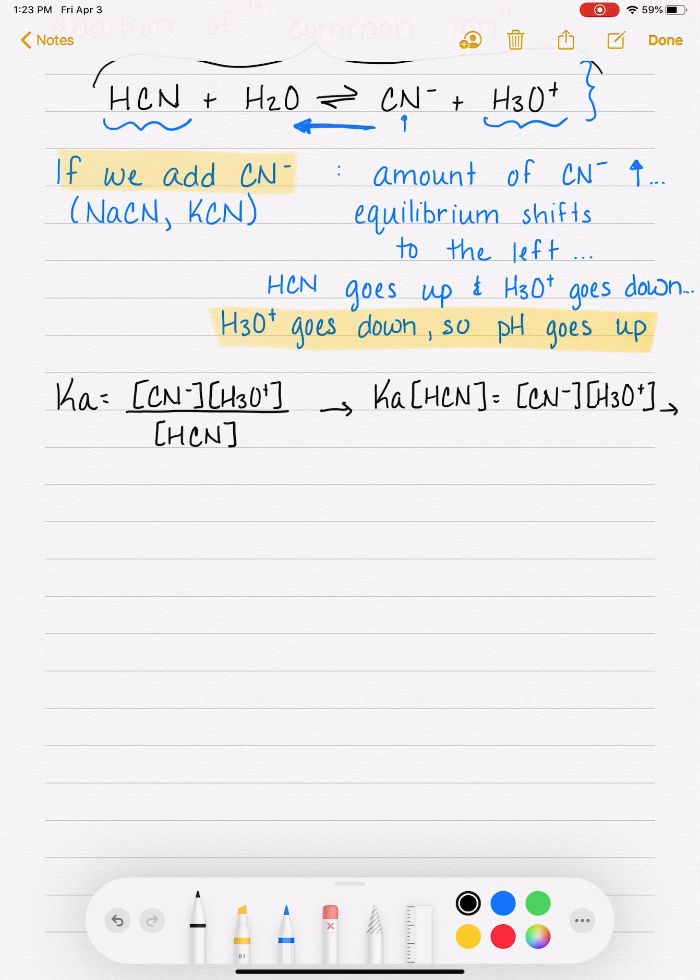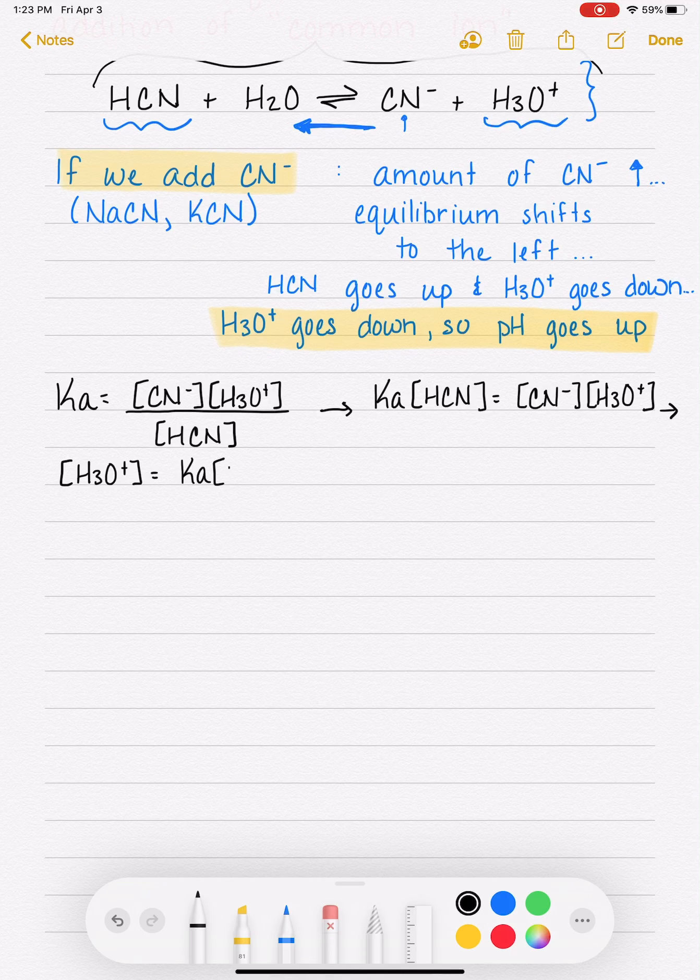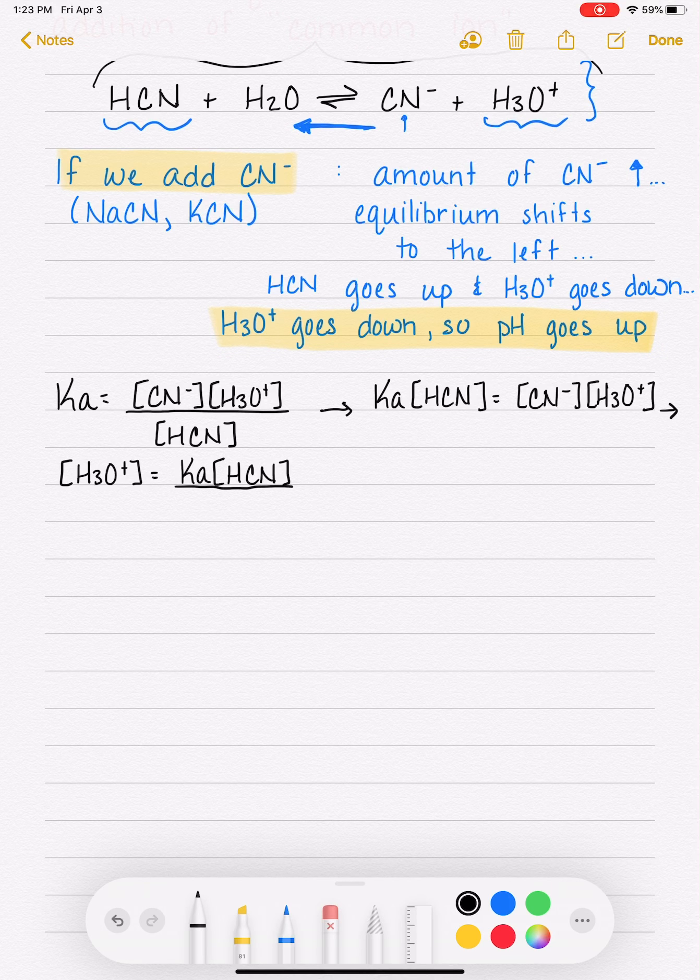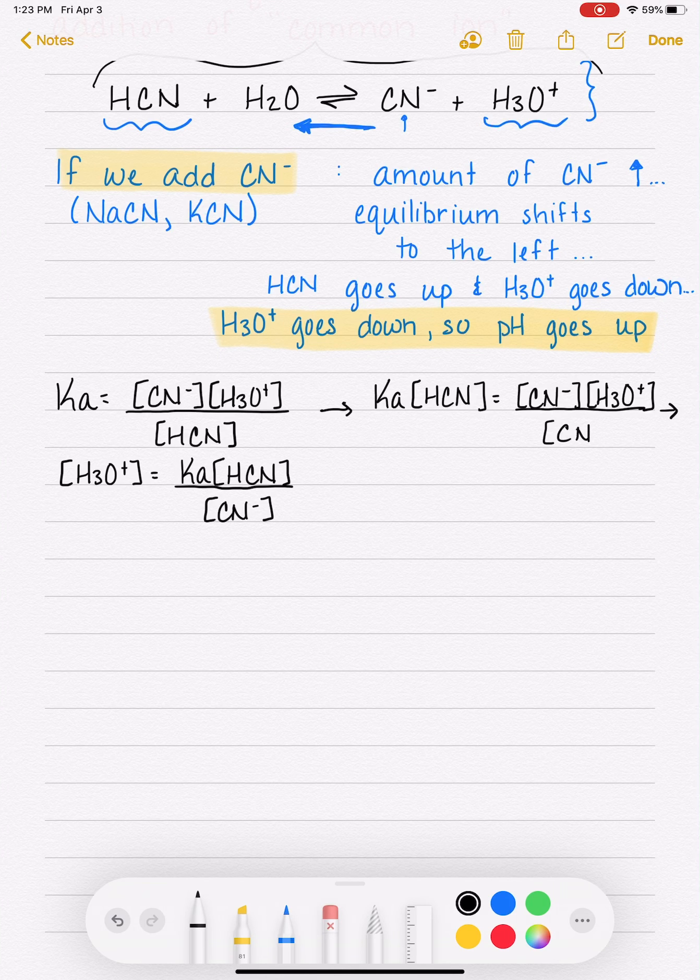Because if we want to calculate the pH of a solution, what we really need to know is the H3O plus concentration. That's what we're going to use to calculate pH. So I'm going to rearrange the equation again. All that I did here was divide both sides by cyanide and isolate H3O plus in the equation and rewrite it. All I've done there is just rewrite the Ka equation.